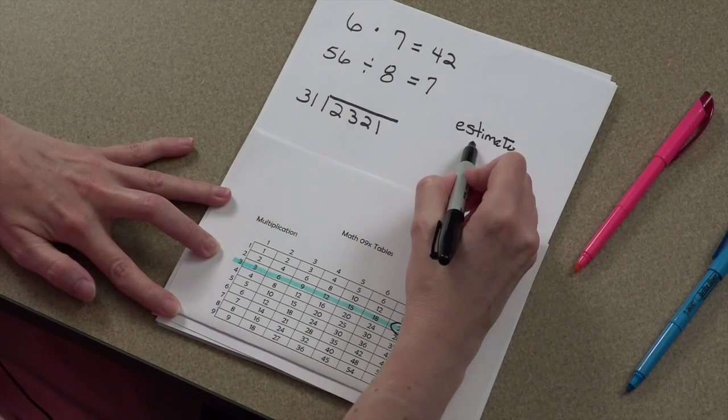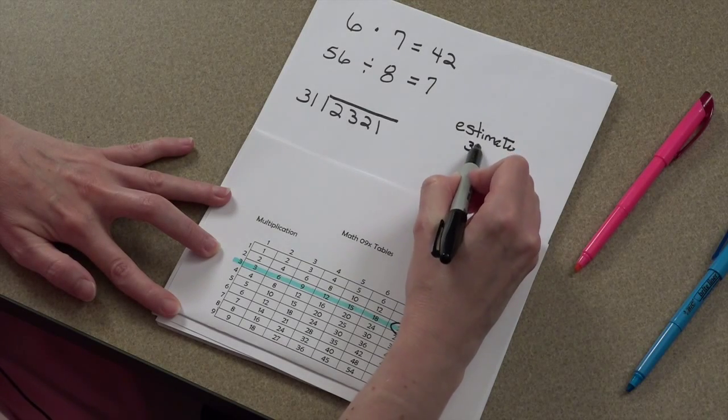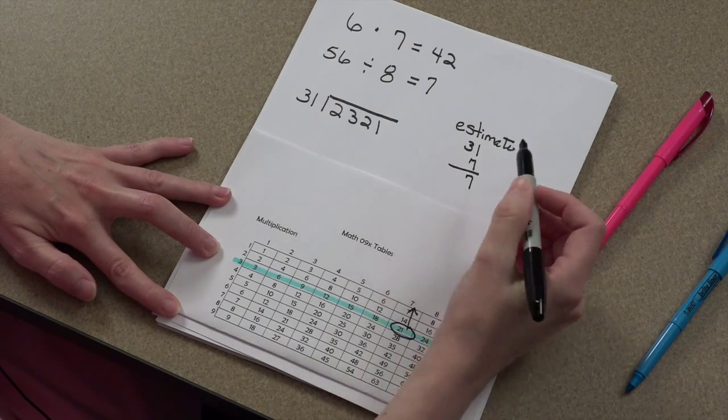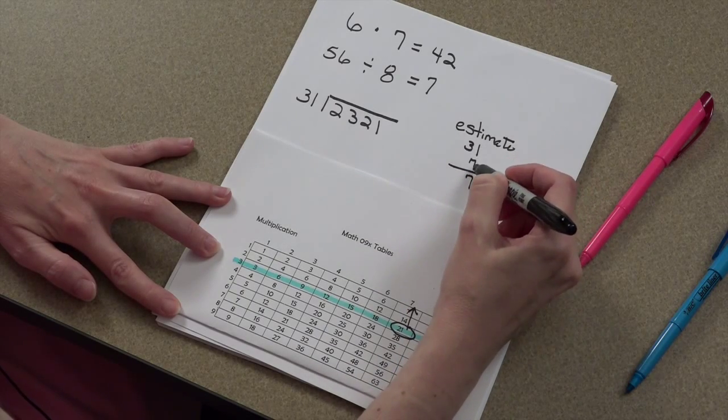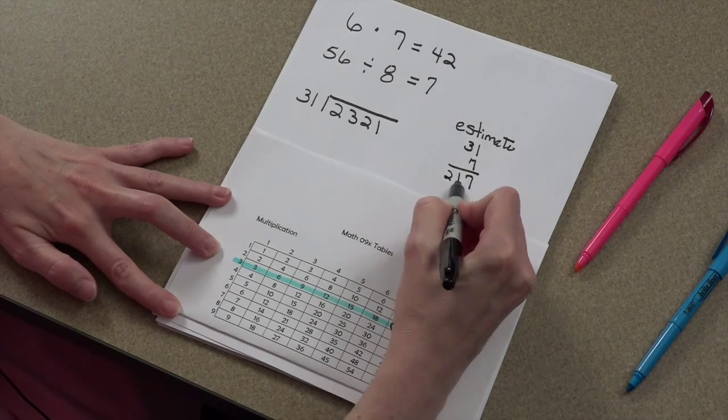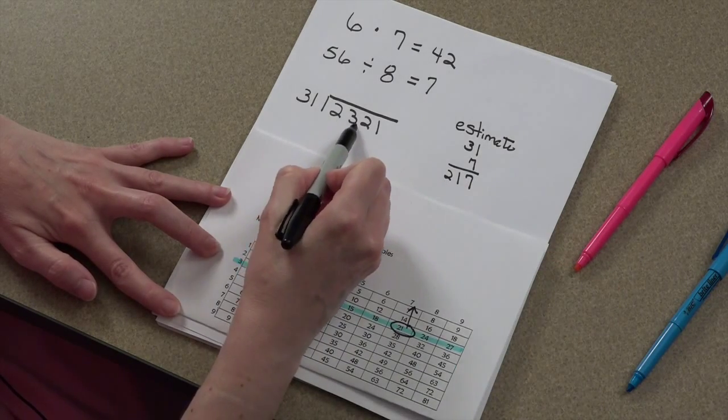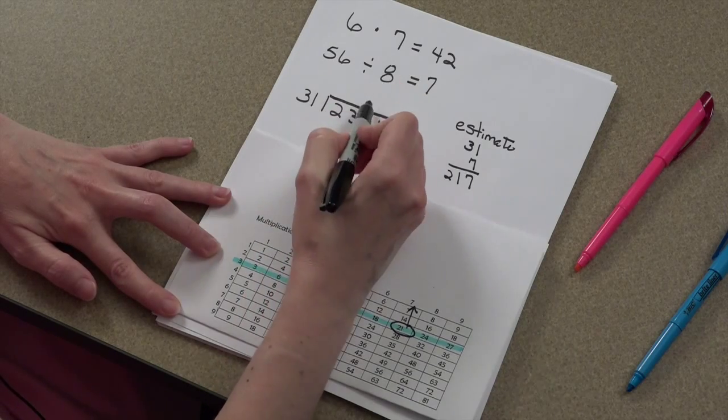But I'm going to write it off to the side, just to be on the safe side, because we don't want to go bigger. 1 times 7 is 7. 3 times 7 is 21. That's 217. 217 is less than 232, so we're in good shape.